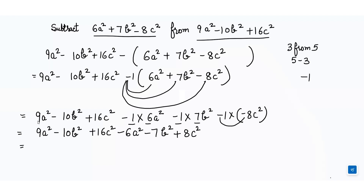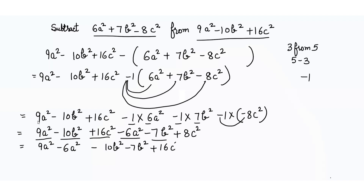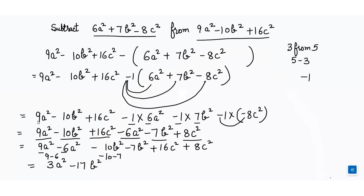Now we write like terms together: 9a² - 6a², then -10b² - 7b², then +16c² + 8c². That gives us: 9 - 6 = 3, so 3a²; -10 - 7 = -17, so -17b²; and 16 + 8 = 24, so +24c². The answer is 3a² - 17b² + 24c².